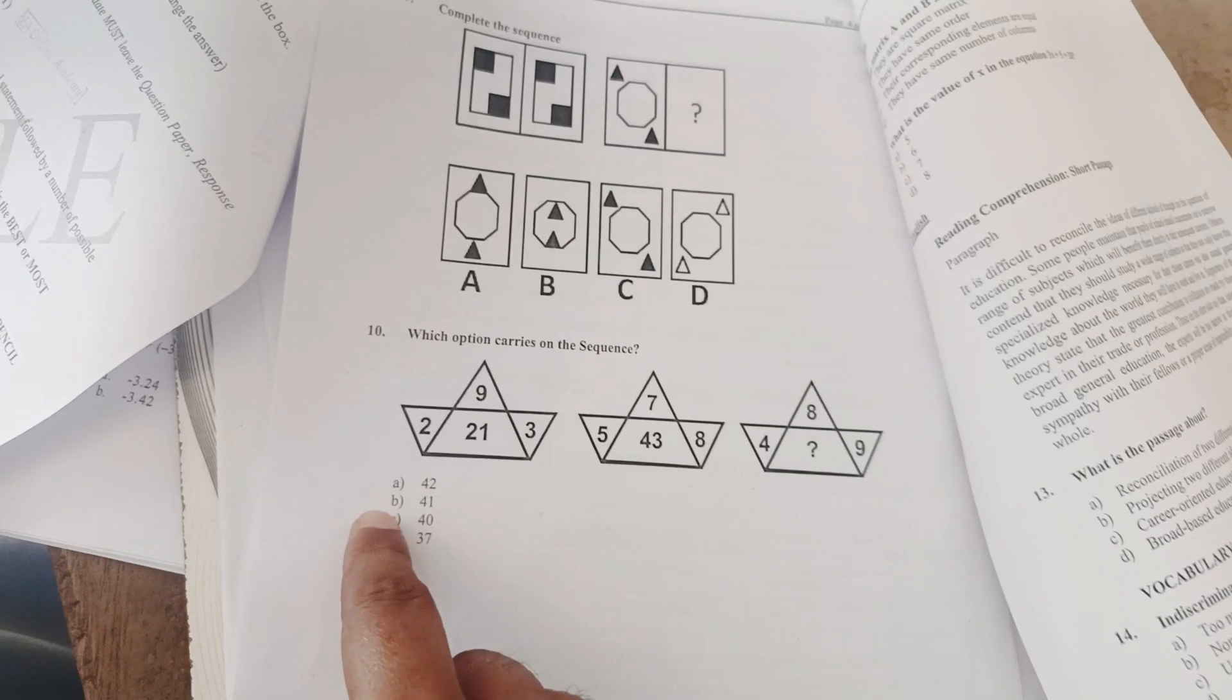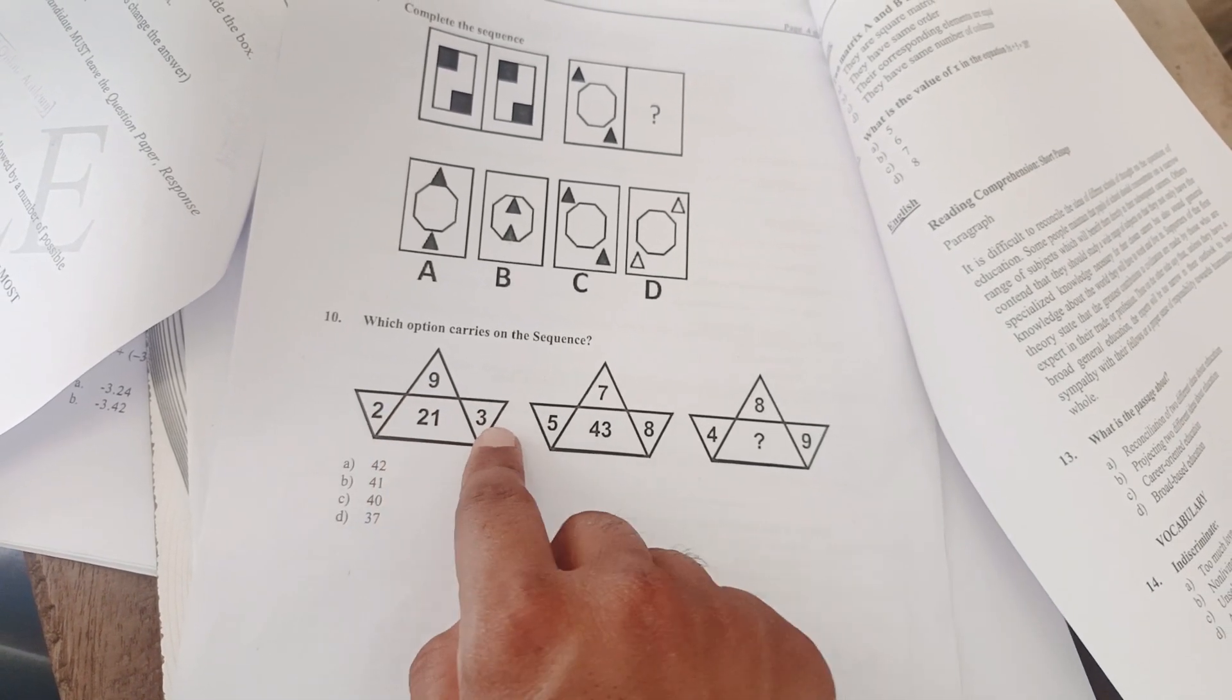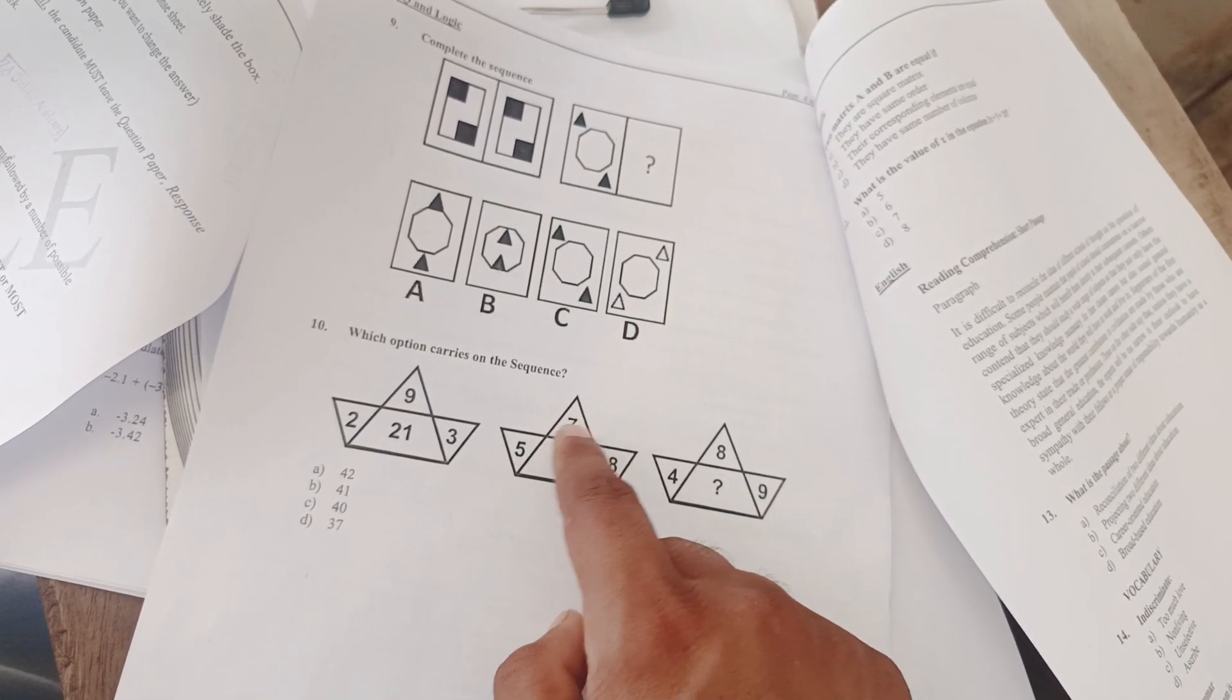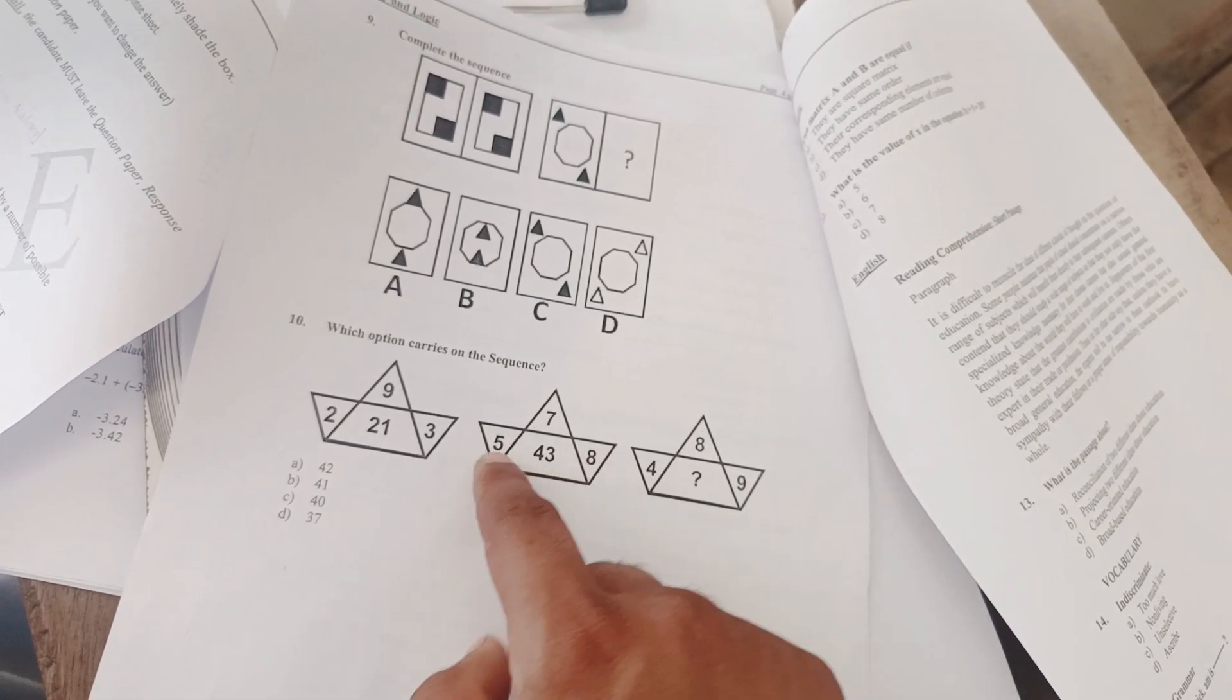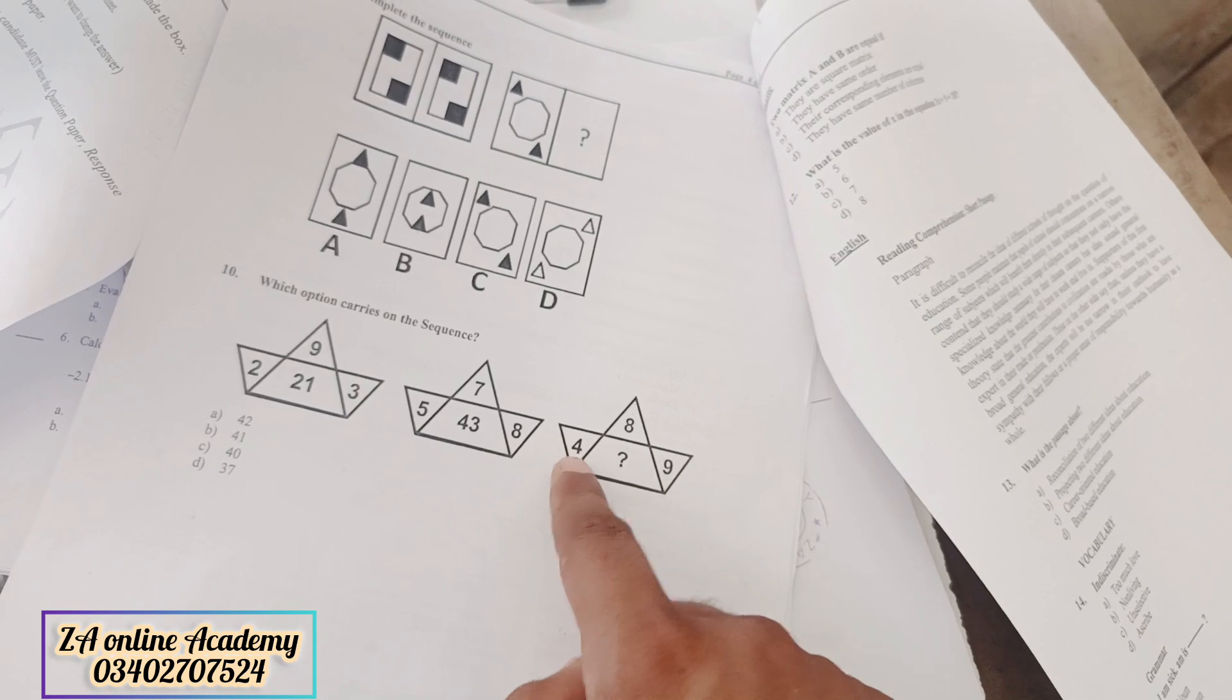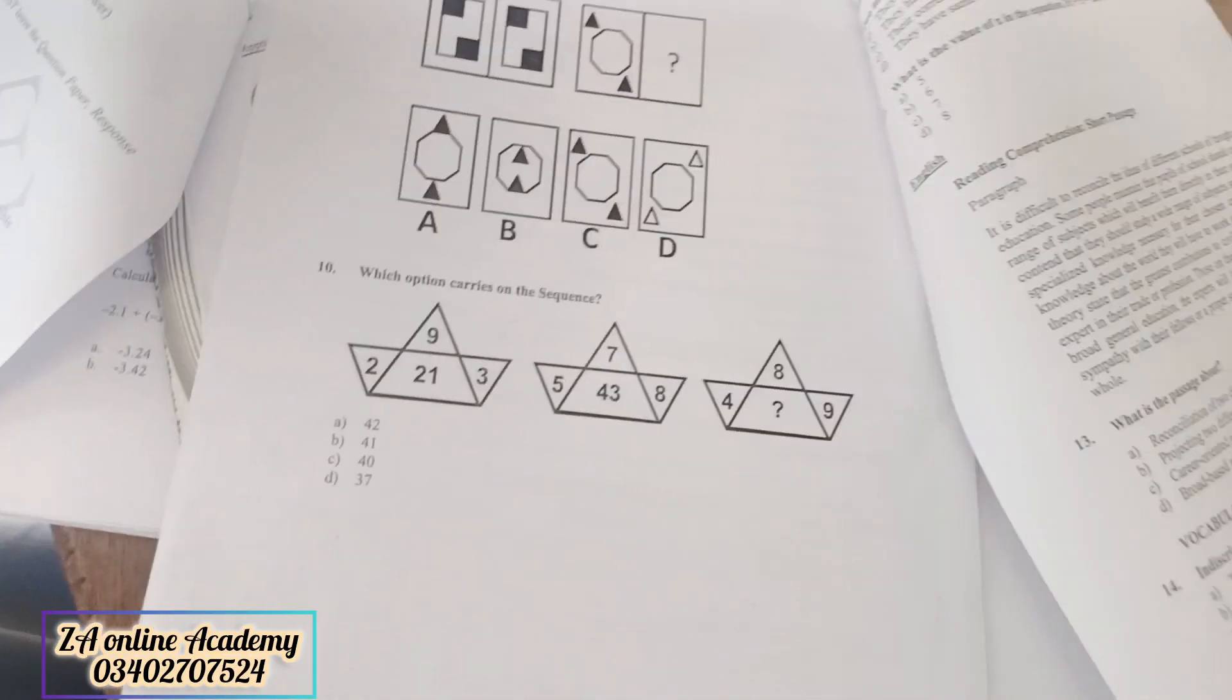This is a series question. First of all, how to solve such types of questions. So let's solve this question. 2, 19, 18 plus 3, 29. We multiply 9 plus 3, then 8 times 5 times 1, 35 plus 8 plus 8, 43.